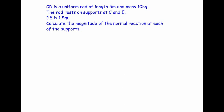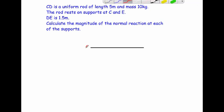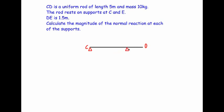First, I'm going to draw a sketch of the rod. C is the beginning of the rod and D is the end, so it's 5 meters long. The rod rests on supports at C and at E — there's a little triangle for each support with the rod on top. E is 1.5 meters away from D, so the distance from C to E is 3.5 meters, since the whole rod is 5 meters.